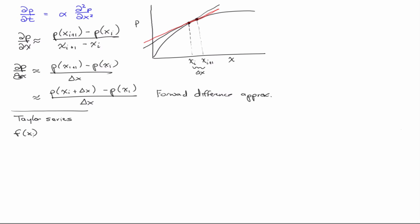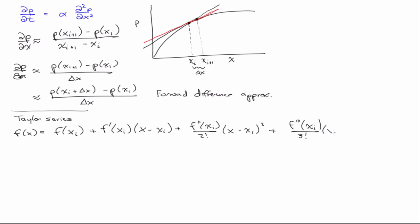In general, for a function evaluated at a point xi, the Taylor series gives the value at a neighboring point as an infinite series involving the derivatives at xi and powers of the step size.